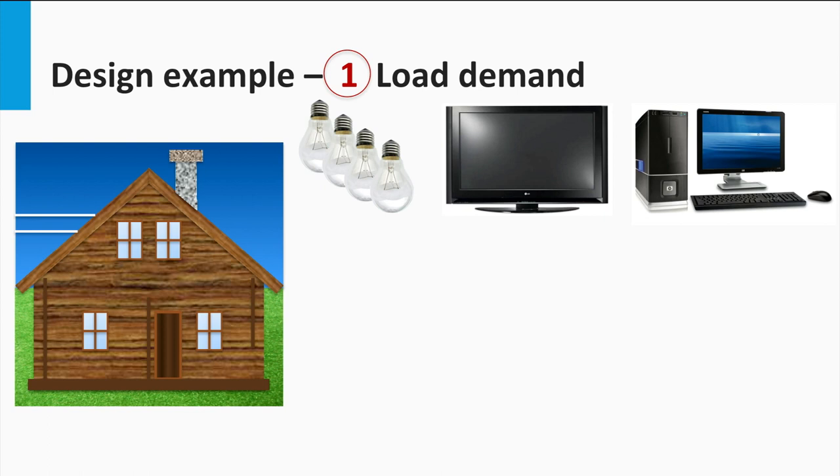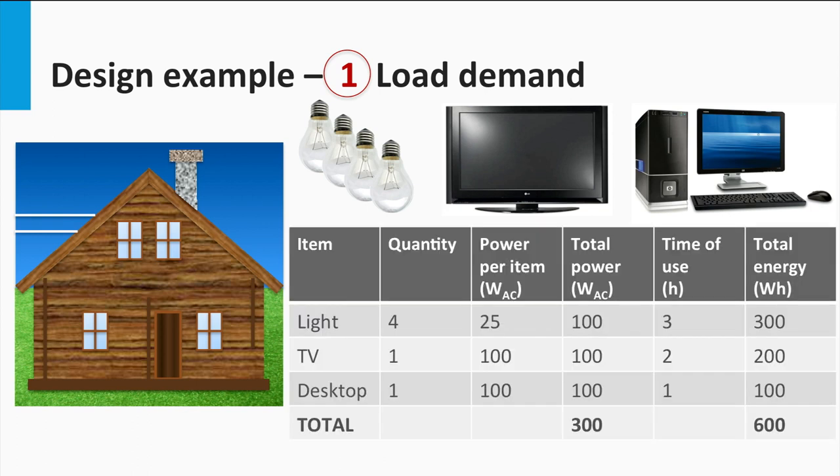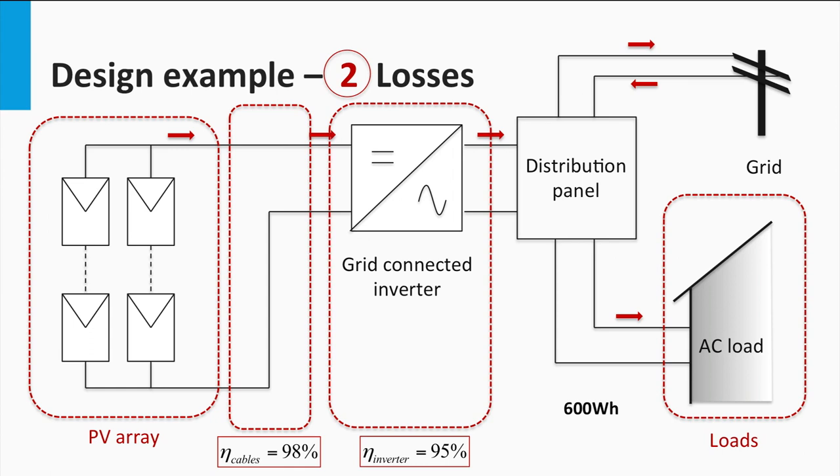Let us consider a similar load demand as shown in the stand-alone PV system design example of the previous block. The required quantities of each kind of load, along with the duration of usage, are mentioned. Note that all the loads in this system are AC loads. The total power and energy requirements have been tabulated here as well. Another main difference here is that there is no concept of autonomous days, as there is no storage. Instead, the electric grid acts as a limitless storage. Let us first account for the losses in the system. This would help us find the energy needed at the output of the PV array to successfully cover the daily load.